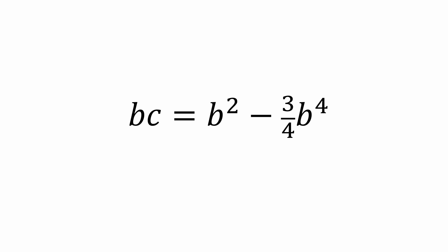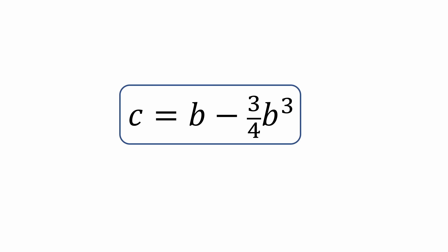Dividing both sides by b, we'll get c equals b minus 3 fourths b to the third. We'll need another equation to solve for c, so let's return to the diagram to see what we can tease out of it.